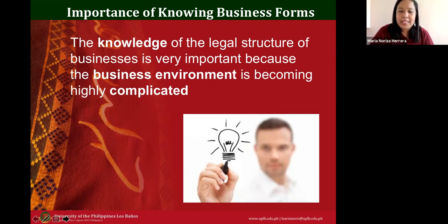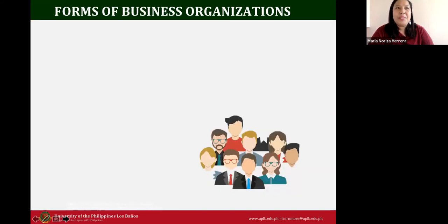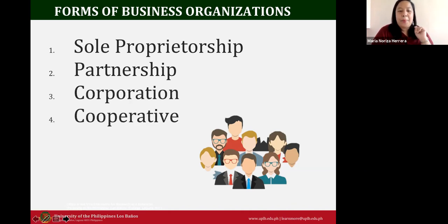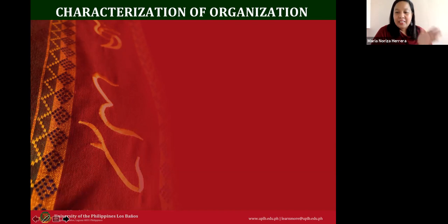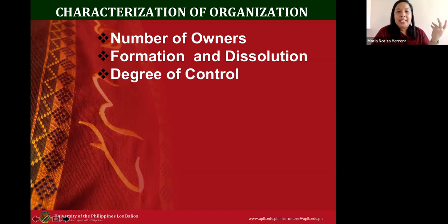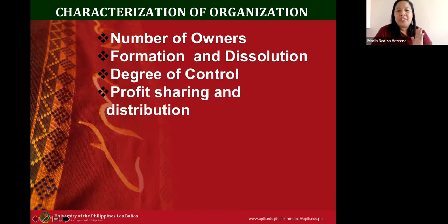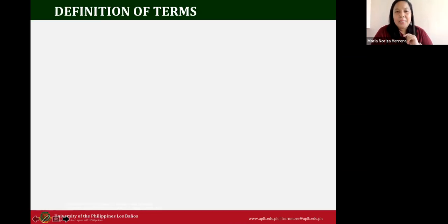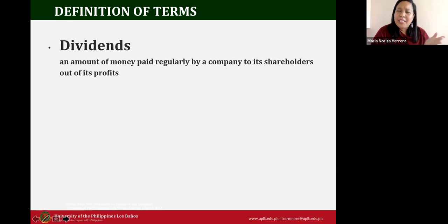The different forms of businesses are: sole proprietorship, partnership, corporation, and cooperative. We'll discuss each one's advantages and disadvantages as well as its characteristics. We'll look at: number of owners, formation and dissolution, degree of control, profit sharing and distribution, degree of formality, transfer of ownership, taxation, and administration. You've probably heard of dividends — corporations, partnerships, and cooperatives pay dividends, which is an amount paid regularly to shareholders out of profits.